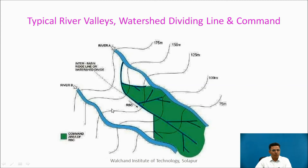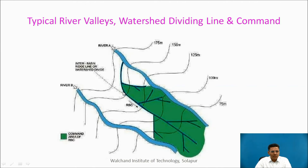This picture shows a typical view of river valleys, watershed divide lines, and command area. There are two rivers with a ridge line in between them. When the canal is brought on this ridge line, it can irrigate on both sides.